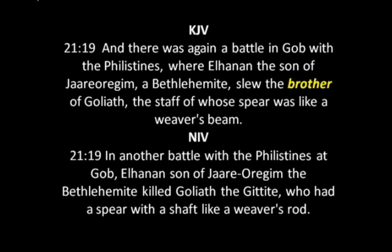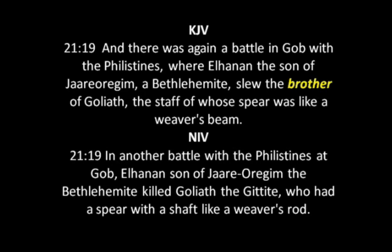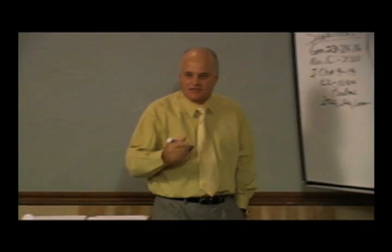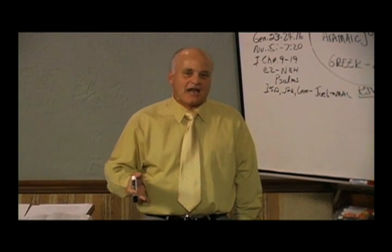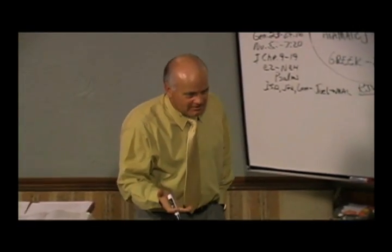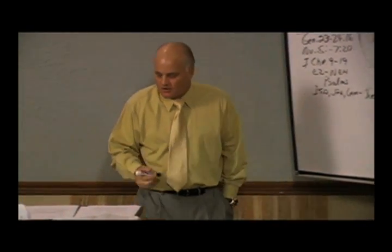Here's one I really like. In the King James, 2 Samuel 21, it says: 'Now there was again a battle with the Philistines, where Elhanan, the son of Jaare-oregim, a Bethlehemite, slew the brother of Goliath, whose staff of whose spear was like a weaver's beam.' So Elhanan slew the brother of Goliath. But look what the NIV says in the same verse: 'In another battle with the Philistines at Gob, Elhanan son of Jaare-Oregim, the Bethlehemite, killed Goliath the Gittite.' Wait — I thought David killed Goliath. But now the NIV is telling you Elhanan killed Goliath. The King James told you he killed the brother of Goliath, preserving the narrative so you understand exactly what's going on. Otherwise you have a conflict.